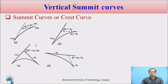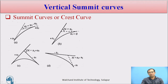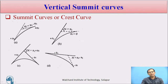A summit curve forms when an ascending gradient meets another ascending gradient; the deviation angle is N = N1 − N2. When an ascending gradient meets level ground, N = N1. When ascending meets descending, N = N1 + N2. When a descending gradient meets another descending gradient, N = N2 − N1.